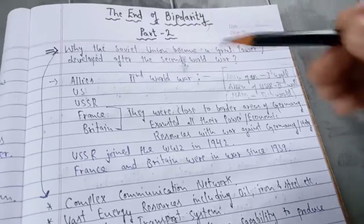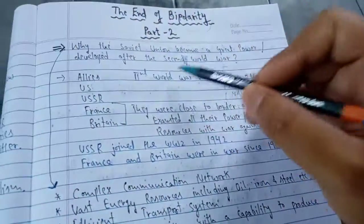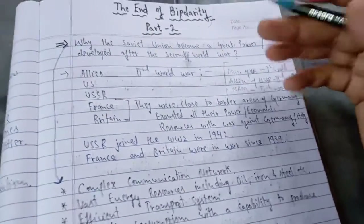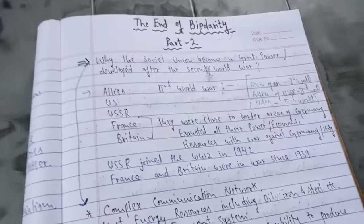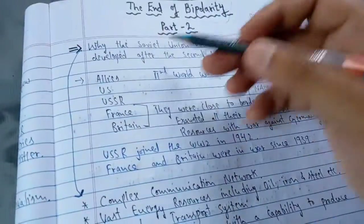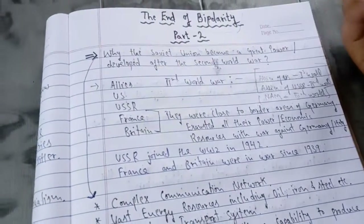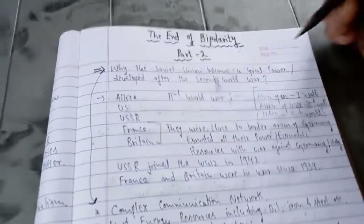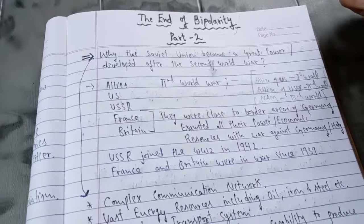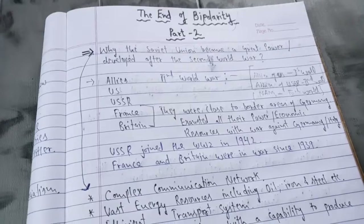Now the first question for this part is: why did the Soviet Union become a great power after the Second World War? One important clarification — whenever we use the terms 'Soviet Union' or 'Soviet system,' we mean the USSR. So how did the USSR become strong and powerful after the Second World War?